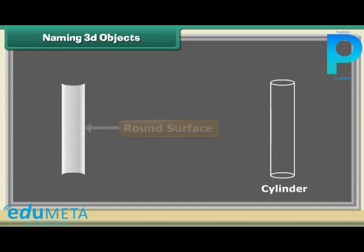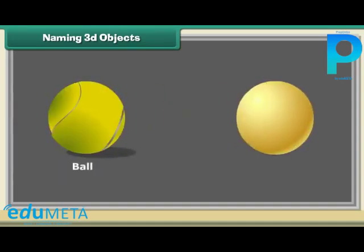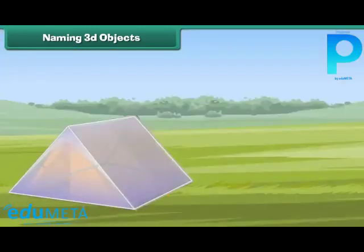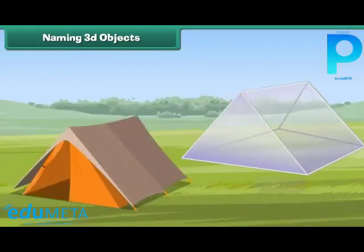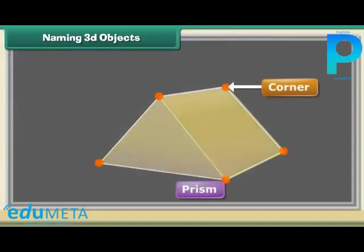A chalk is a cylinder. It has a round surface and two flat surfaces. A ball is a sphere — it has a round surface. A tent is a prism; it has corners and flat surfaces.